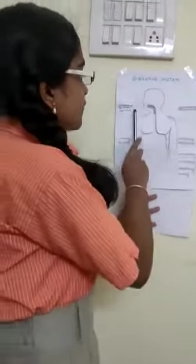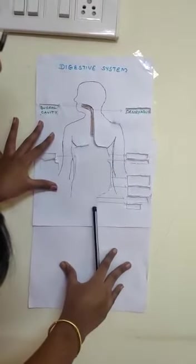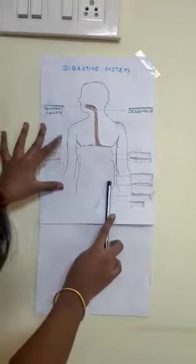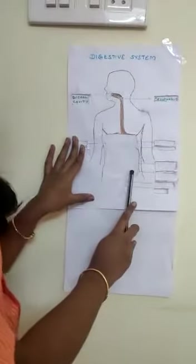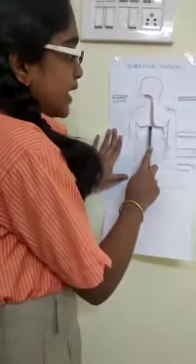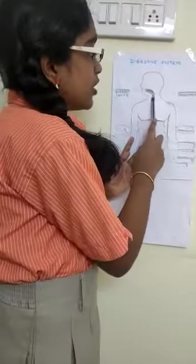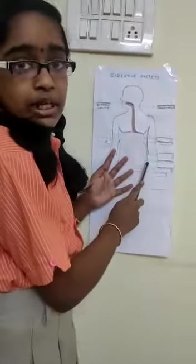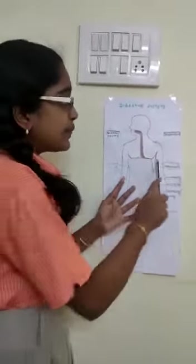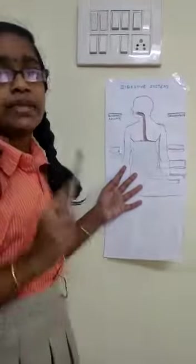After the food is swallowed, it goes through a long continuous path which is known as the esophagus or the food pipe. The esophagus is a long path and it helps the food to reach the stomach. There is a movement happening in the esophagus which is known as peristalsis.